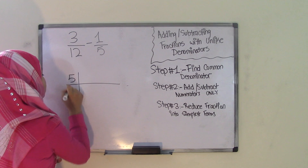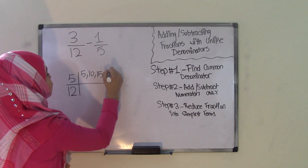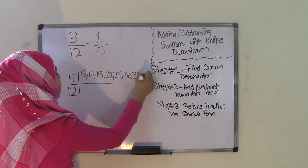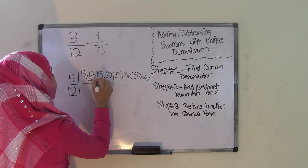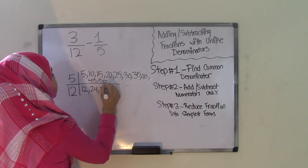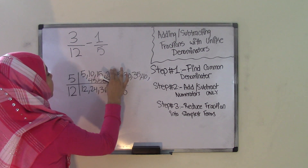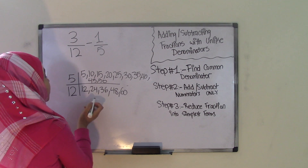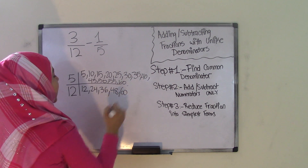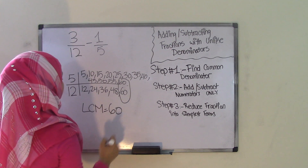Find the LCM of 5 and 12. Listing multiples of 5: 5, 10, 15, 20, 25, 30, 35, 40, 45, 50, 55, 60. Now listing multiples of 12: 12, 24, 36, 48, 60. As you can see, 60 and 60 match — this is the first pair of matching multiples we found. Therefore, 60 is our LCM for the two numbers 5 and 12, and our common denominator will also be 60.